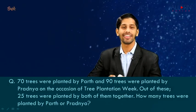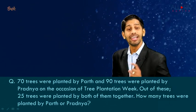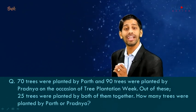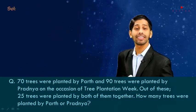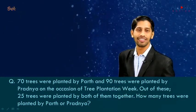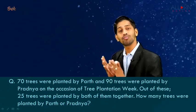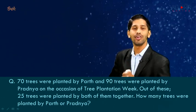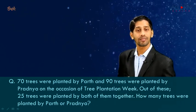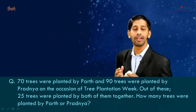Hi, let's take one more very interesting sum based on the concept of word problems, but here we are going to solve this sum using a formula. So what is given to us: 70 trees were planted by Parth and 90 trees were planted by Pratnya on the occasion of tree plantation. Out of this, 25 trees were planted by both Parth and Pratnya together. We need to find how many trees were planted by Parth or Pratnya. We are going to convert each of these statements into mathematical form.